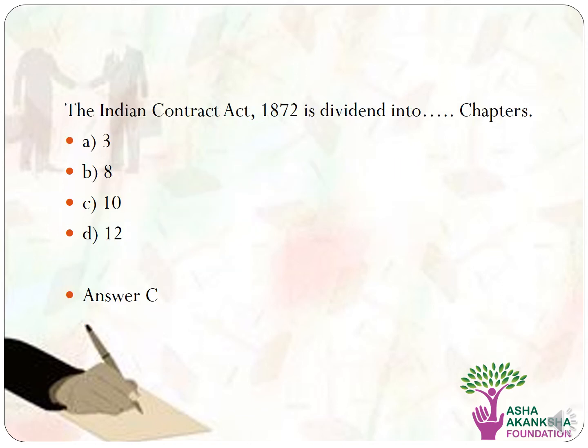The Indian Contract Act 1872 is divided into how many chapters? Options are: A) three, B) eight chapters, C) ten chapters, D) twelve chapters. The correct answer is option C, that is the Indian Contract Act is divided into 10 chapters.